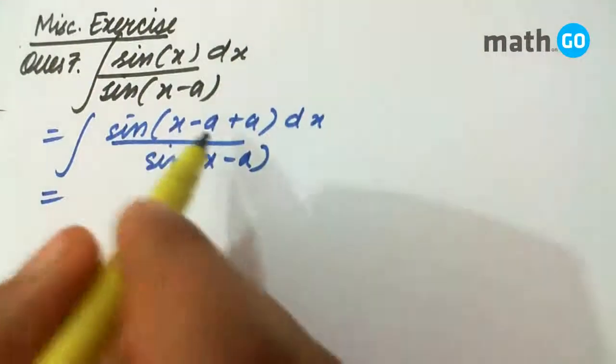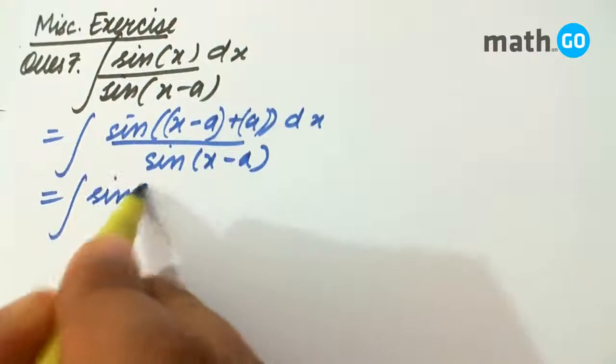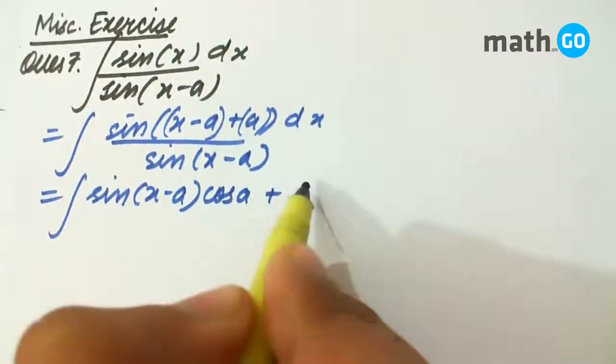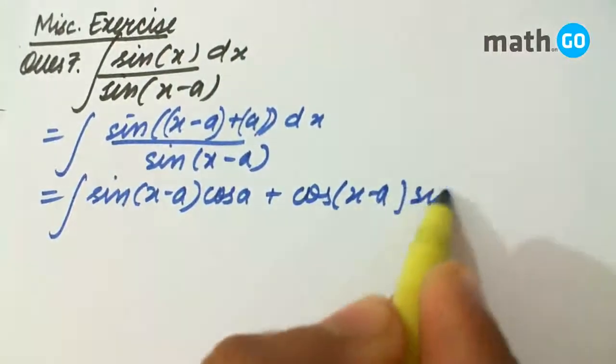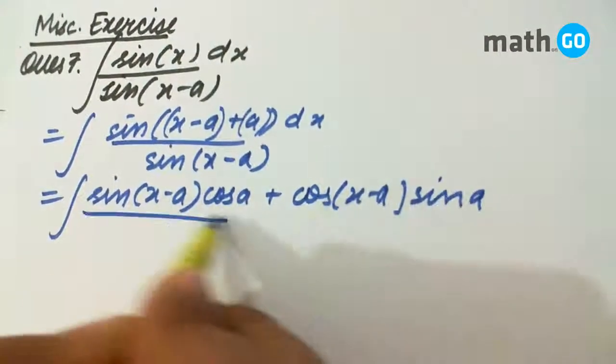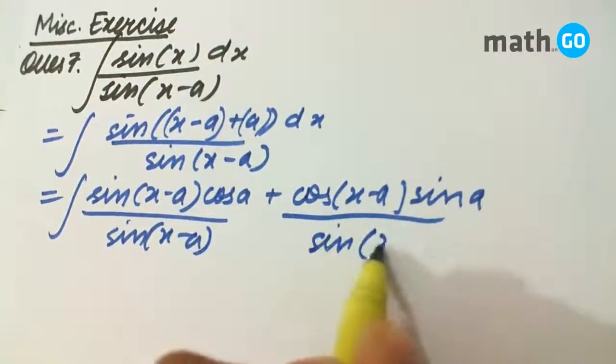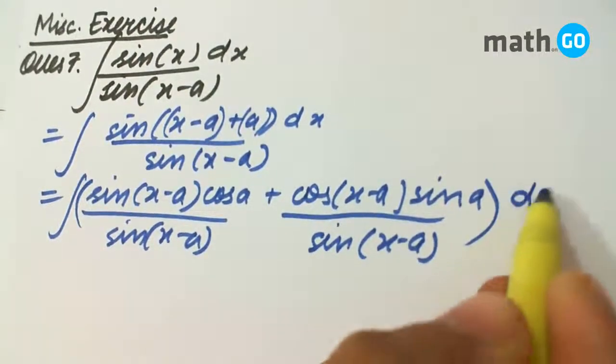We use the sine a plus b formula where a is (x-a) and b is a, so sine of (x-a+a) equals sin(x-a)cos(a) plus cos(x-a)sin(a). We divide both terms by sin(x-a) to get the same dx.